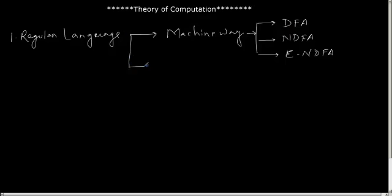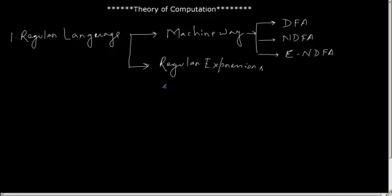Also, in the last class, we looked at another way of creating or building the words of a regular language, and that is through regular expressions. Regular expressions, as I had already told you, are basic atomic expressions on which we apply some operations like union, concatenation, and Kleene closure to generate the words of a given regular language. We have seen that if a language is regular, there always exists a corresponding regular expression, and if there exists a regular expression, we can always create a machine to accept the language generated by that regular expression.